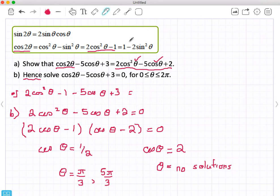So this is the second part of using the double angle identity.